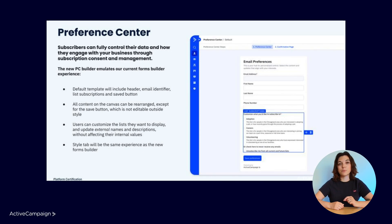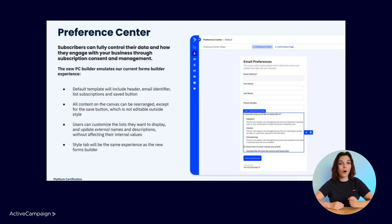Lastly is the preference center, a secure place where contacts can update their consent and communication preferences anytime. Collecting your contacts' communication preferences enhances the quality of your data and segmentation, helping to personalize your customer journey. You always want to provide an option for customers to select the emails they want to receive. This way, they'll be more engaged and you won't risk your sender reputation.